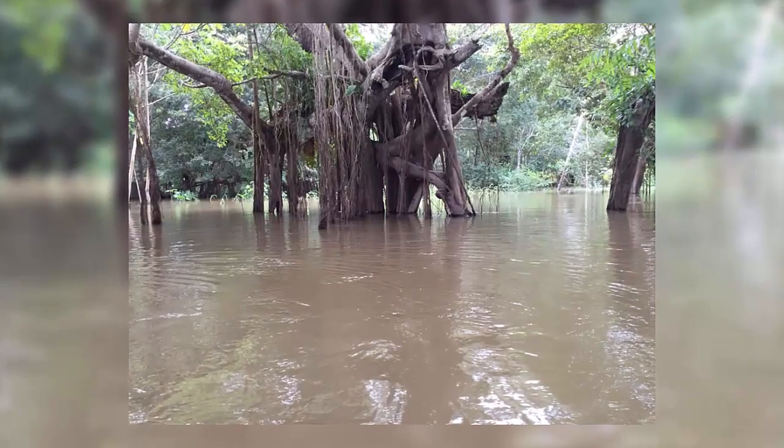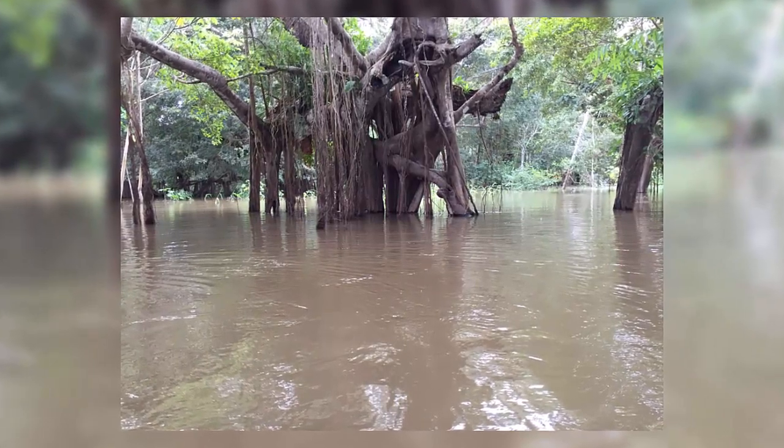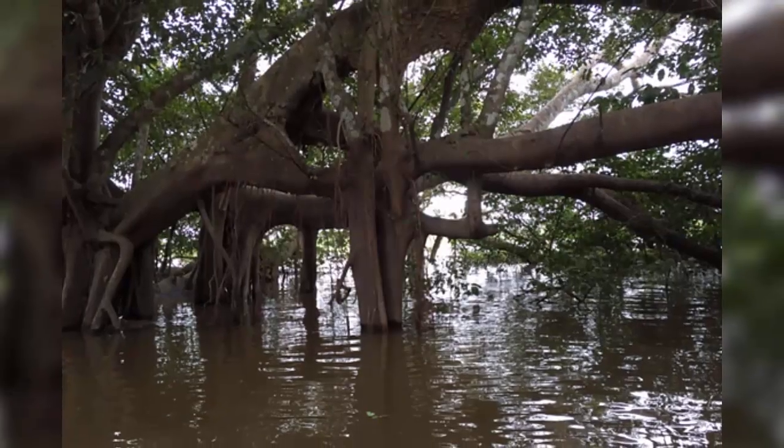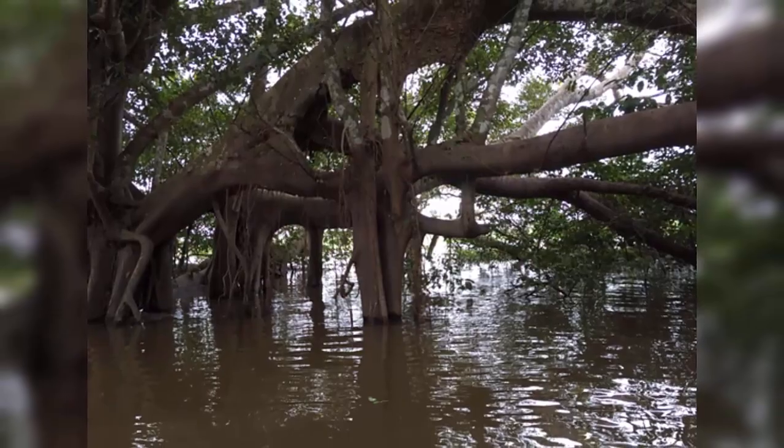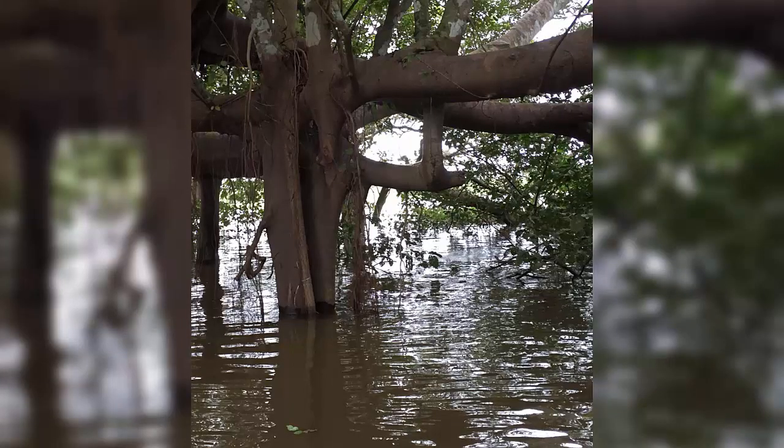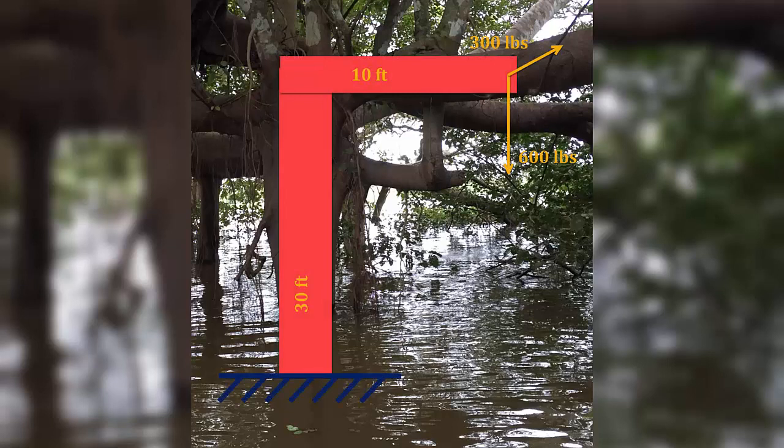One showing the tree partially submerged in the water. Another one gives a closer look at the branch structure. A simple model of the tree is like a bent rod fixed at the ground with forces applied at the top end of the rod as shown here.